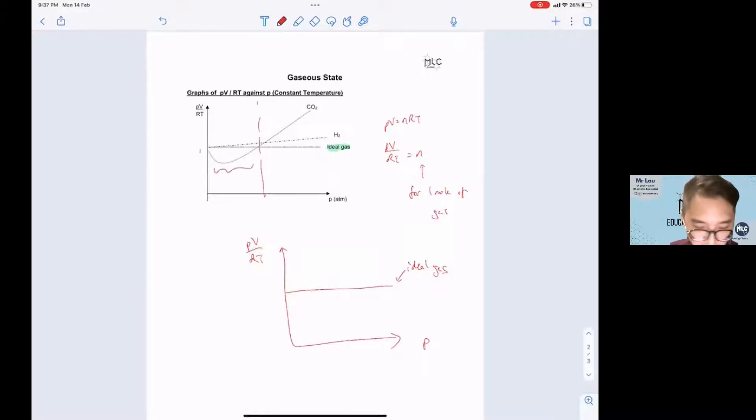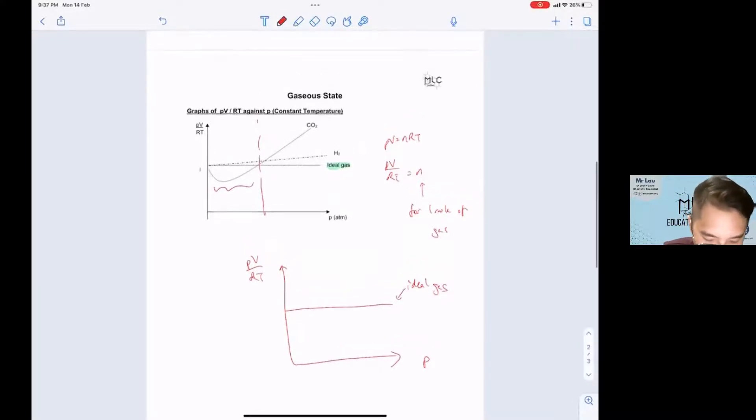The greater the deviation is due to the greater IMF, the stronger IMF. So for example, CO2 is IDID interactions and it has a stronger IDID compared to hydrogen.